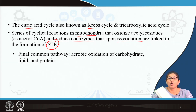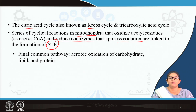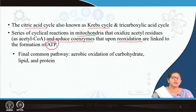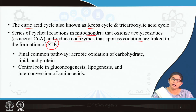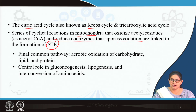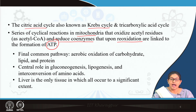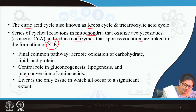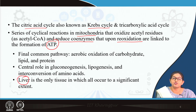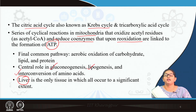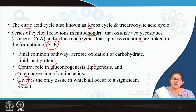TCA cycle is also the final common pathway for aerobic oxidation of carbohydrate, lipid, and protein, because acetyl coenzyme A comes not only from glucose through pyruvate, but also from fatty acids by fatty acid oxidation and from different amino acids. TCA cycle also plays a central role in gluconeogenesis, lipogenesis, and interconversion of amino acids. With respect to TCA cycle, the liver is the most important organ — it is the only tissue where all these metabolic pathways are happening to a significant extent.